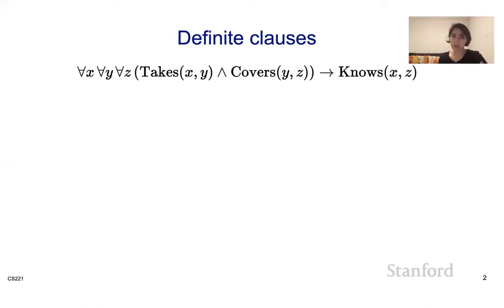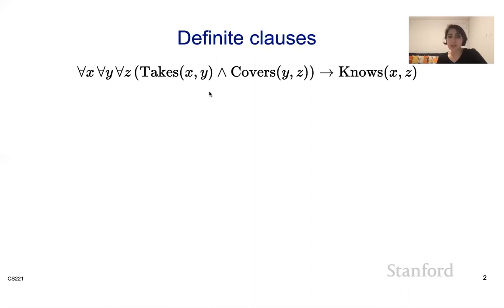If you remember, horn clauses were definite clauses and goal clauses. Definite clauses were of the form of having some set of positive literals — P and Q, for example — implying some Q. So how do we extend that idea of a definite clause to first order logic? We are going to have a set of variables and quantifiers on top of them. For example, a definite clause might say: for all x, for all y, for all z, takes(x, y) and covers(y, z) implies knows(x, z).